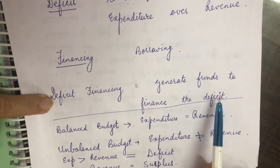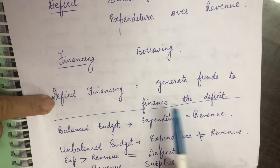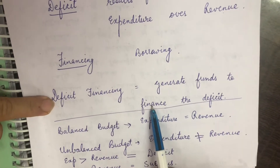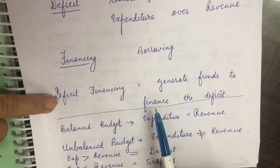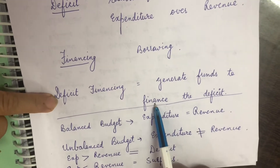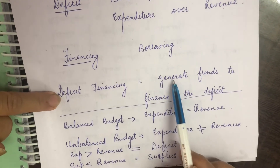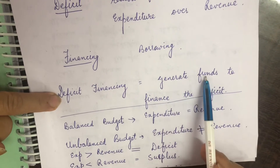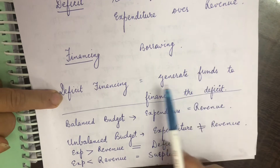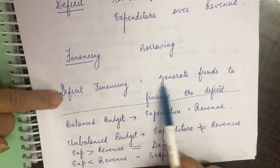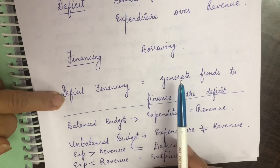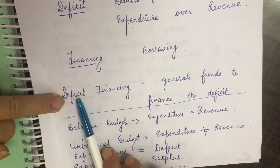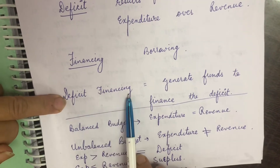Deficit financing is generating funds to finance the deficit. Deficit means the gap. To finance the gap, to fill it and complete it, we will generate funds — we will bring money. So this is our deficit financing.